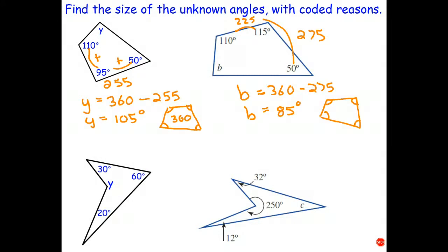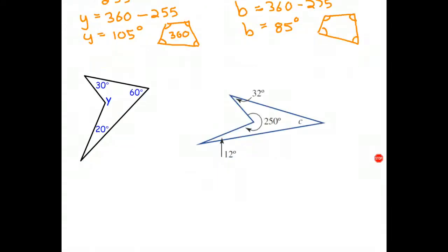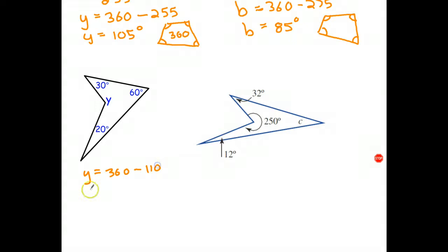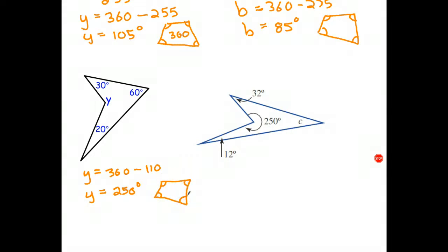For the next one, these are fairly easy to add up. 30 plus 20 is 50, and 50 plus 60 is 110. So angle Y is a reflex angle — it's bigger than 180. 360 take away 110: take 100 away from 360 to get 260, then take away another 10, giving 250 degrees. Coded reason: angles in a quadrilateral add to 360.